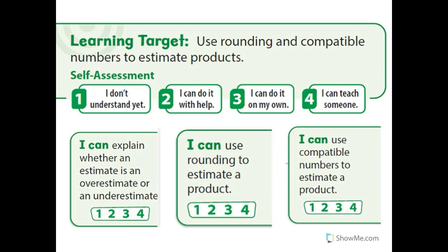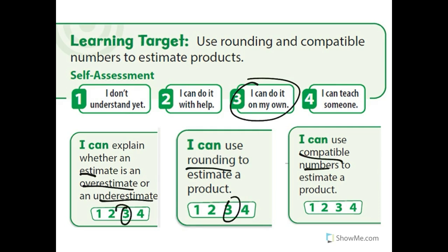Let's go back and look at our learning target: use rounding and compatible numbers to estimate products. Hopefully, you can do that. I can explain whether an estimate is an overestimate or an underestimate. I can use rounding to estimate a product. I can use compatible numbers to estimate a product. So hopefully, you can do all these by yourself. If you can't, I'll give you some help if you need it, and those of you who can teach someone to do it can help those who need help as well.